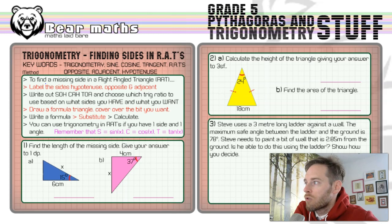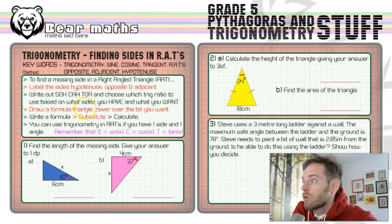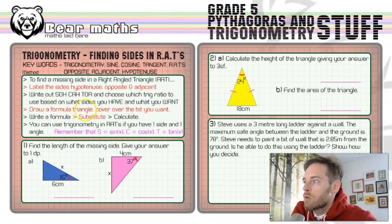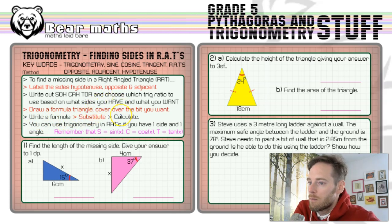To find a missing side in a right-angled triangle: label the sides — hypotenuse, opposite, and adjacent. Then write out SOHCAHTOA. This is a thing you need to remember: S-O-H-C-A-H-T-O-A. Choose which trig ratio to use based on what sides you have and want. Draw a formula triangle, cover over the bit that you want, write a formula, substitute into the formula, and calculate.